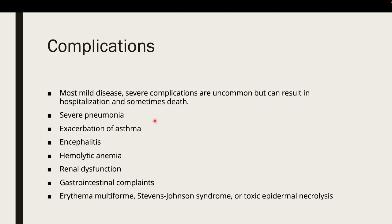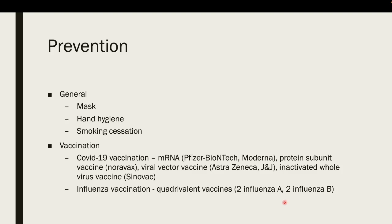For complications, most atypical pneumonia is mild. Severe complications are uncommon, but it can result in hospitalization and sometimes death. Mild disease can lead to severe pneumonia, exacerbation of asthma, encephalitis, hemolytic anemia leading to severe anemia, renal dysfunction, gastrointestinal complaints, erythema multiforme, Stevens-Johnson syndrome, and toxic epidermal necrolysis.